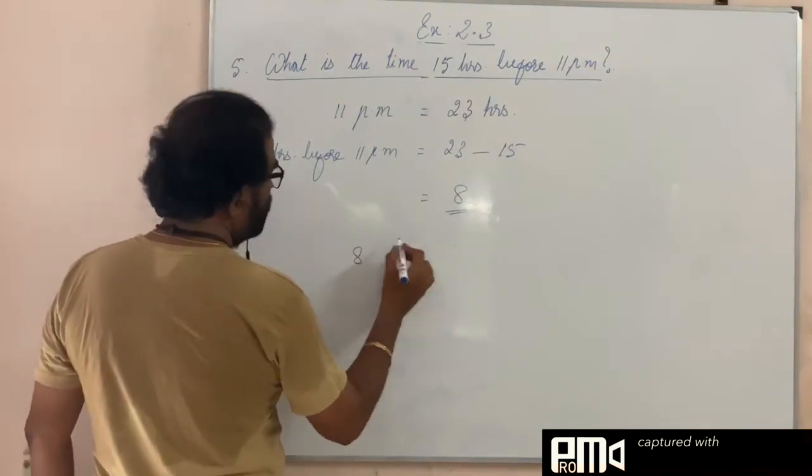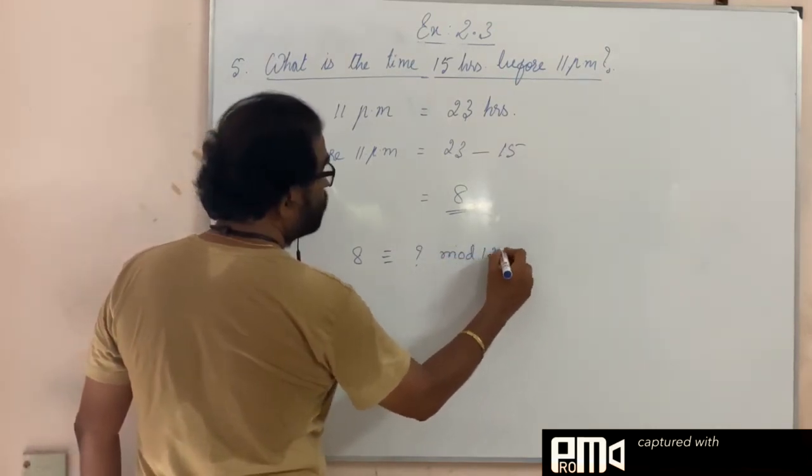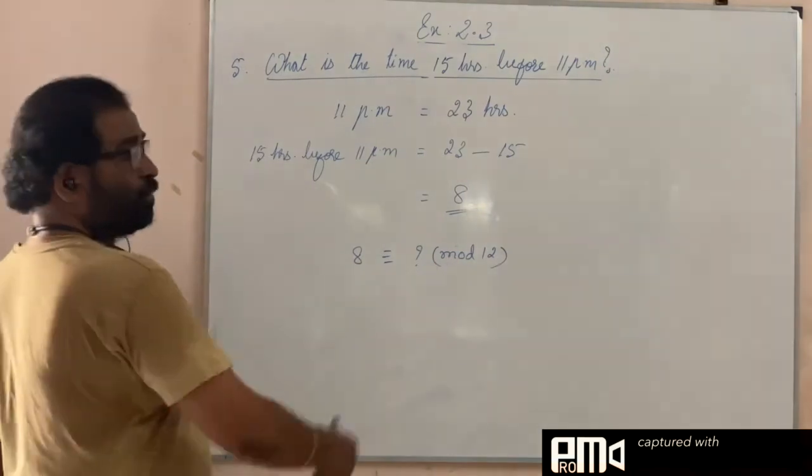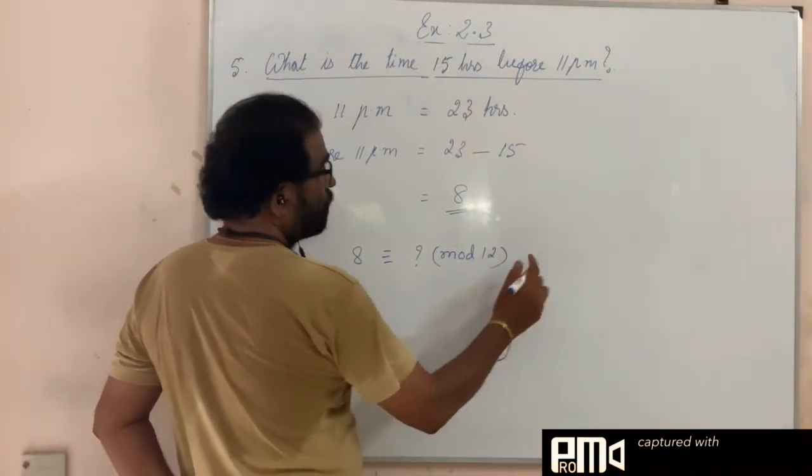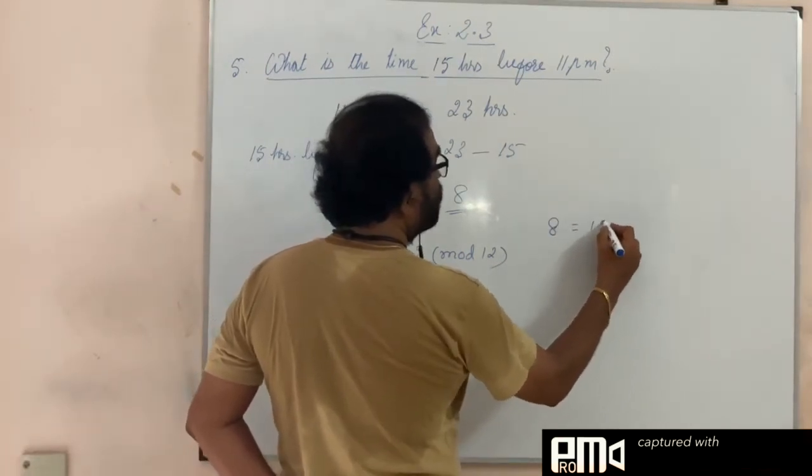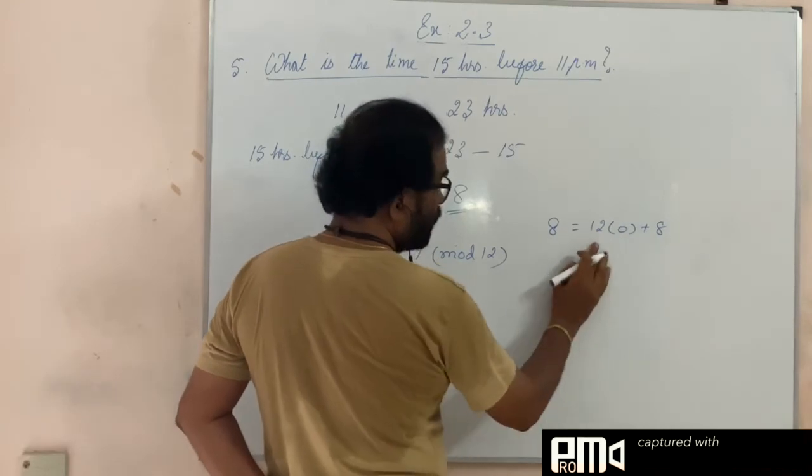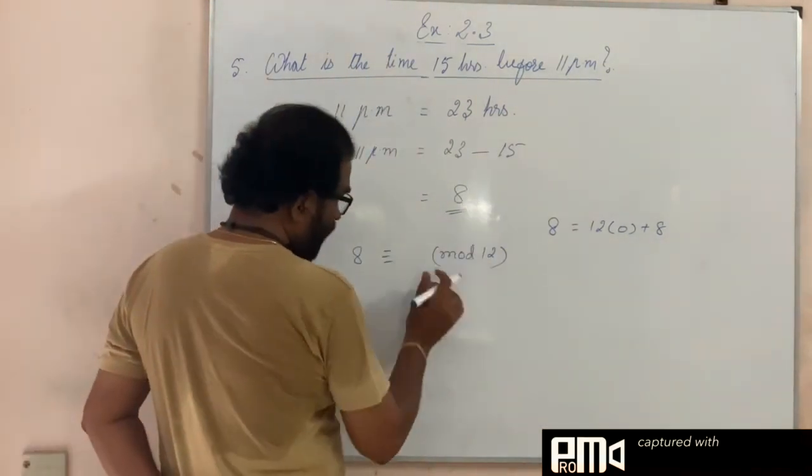You know that in modular arithmetic, 8 is congruent to which number mod 12? In the division algorithm, 8 equals 12 times 0 plus 8. When 8 is divided by 12, the remainder is 8, so this is 8 only.